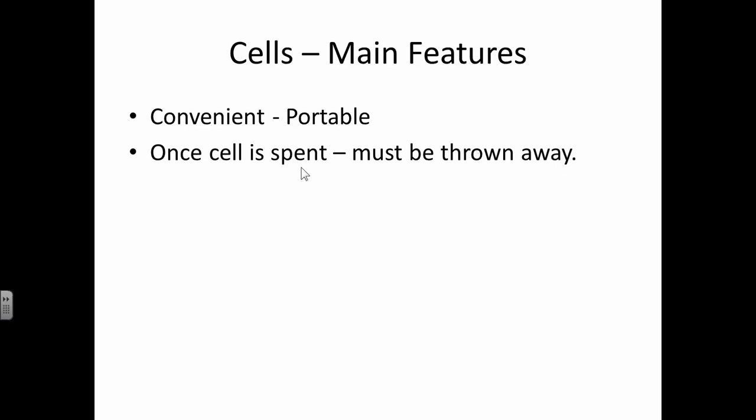So what are the main features of a cell? Firstly, it's convenient. It's small. It's portable. Secondly, once the cell is spent, when it's finished, it must be thrown away. So this has an effect on the environment.